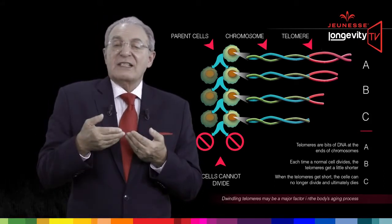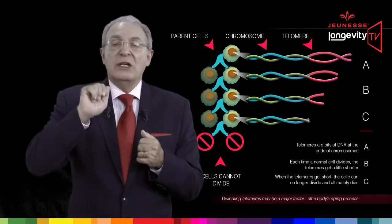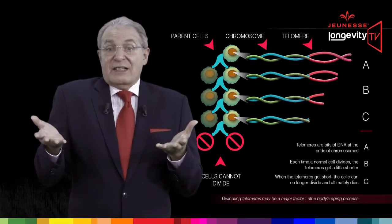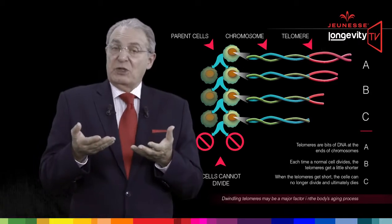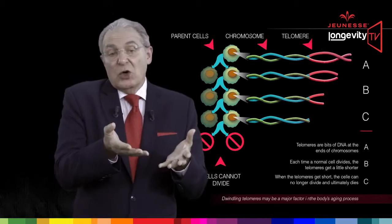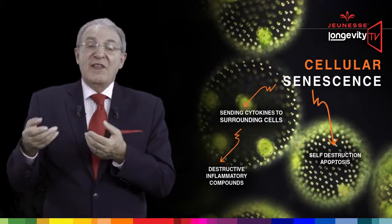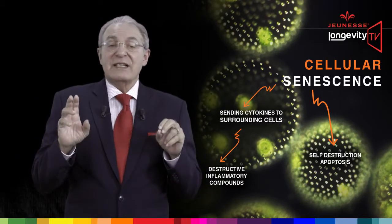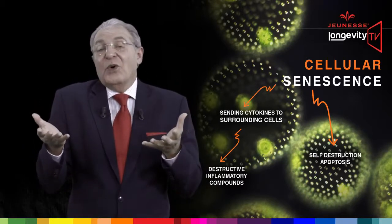Meanwhile, after 50 to 70 divisions, the cells in our body reach a stage where there is no more telomere to protect our DNA. Those cells can no longer reproduce themselves — they reach what we call a retirement-like state in which they die or no longer divide. This endpoint is called senescence, and when senescence reaches a majority of cells, we die of old age.